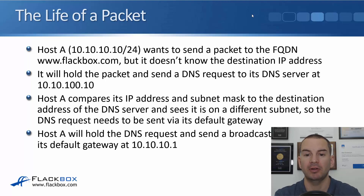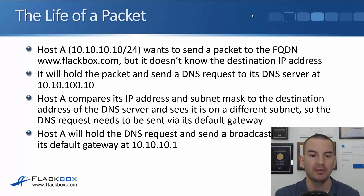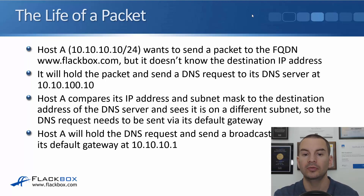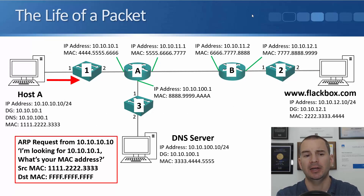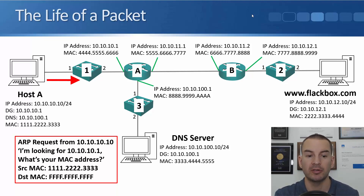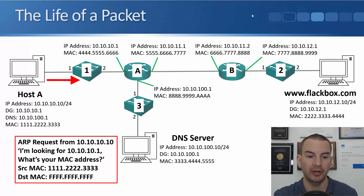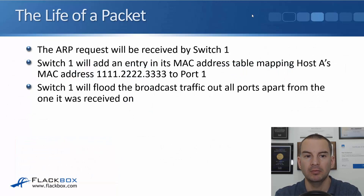Host A compares its IP address and subnet mask to the destination address of the DNS server and sees that it's on a different IP subnet, so the DNS request will need to be sent via its default gateway. Host A will hold the DNS request and send a broadcast ARP request for its default gateway at 10.10.10.1. Host A sends an ARP request from 10.10.10.10 looking for its default gateway at 10.10.10.1, asking what its MAC address is. The source MAC is 1.2.3 and the destination MAC is the layer 2 broadcast address ff.ff.ff.